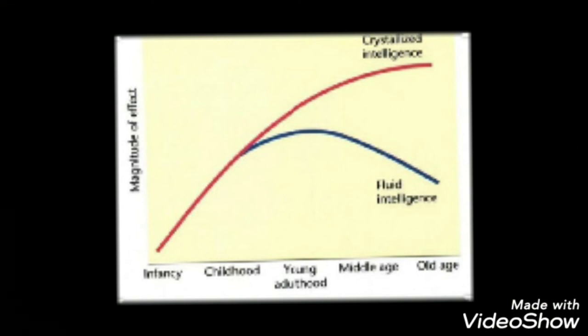And here is a graph which shows that in infancy there is no distinction that can be drawn between fluid and crystallized intelligence. Between infancy to the age of 15 or 16 years approximately, fluid and crystallized intelligence show identical growth curves.